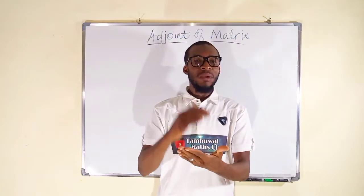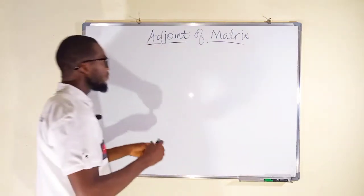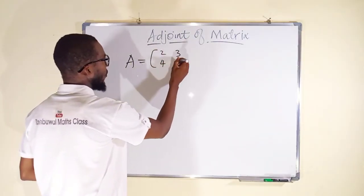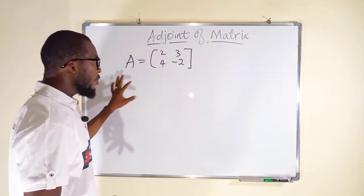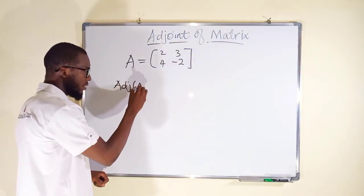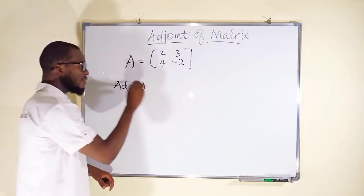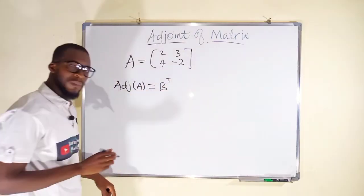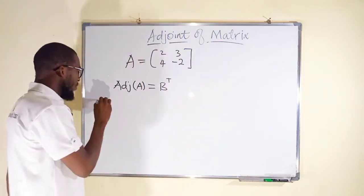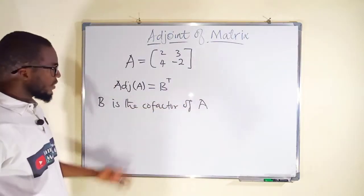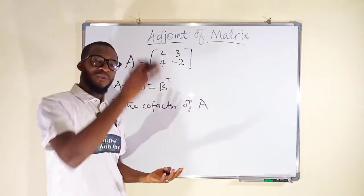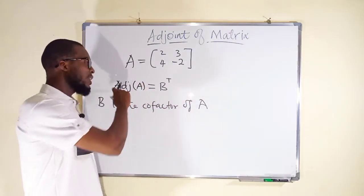Let me represent a 2x2 matrix A to explain what an adjoint is. We have a 2x2 matrix A with entries 2, 3, 4, and negative 2. We want to find the adjoint of this matrix, denoted as ADJ(A). The adjoint is the transpose of B, where B is the cofactor matrix of A. Step one: find the cofactors of all entries. Step two: take the transpose of the cofactors — that gives the adjoint.